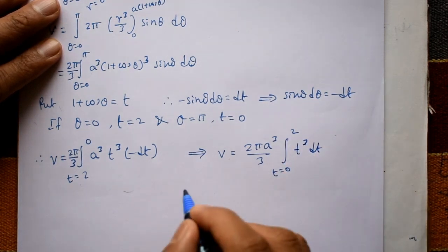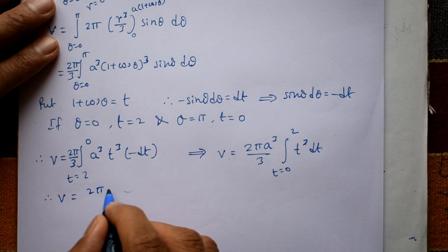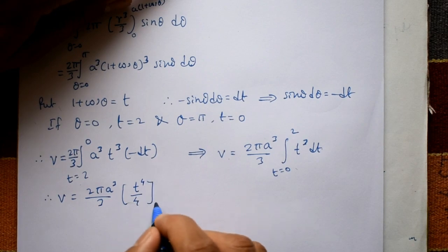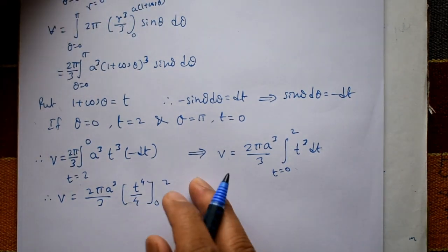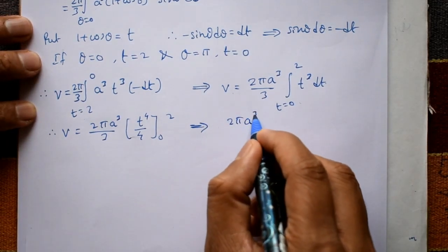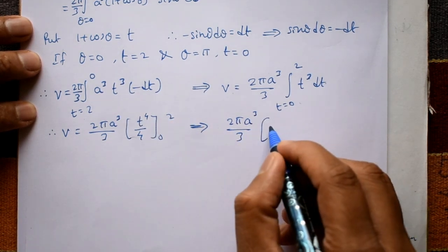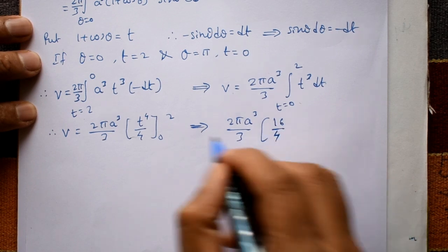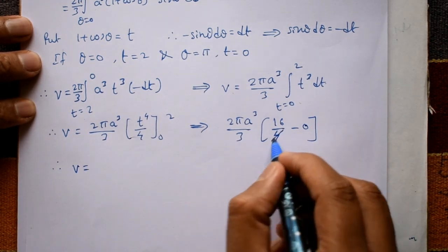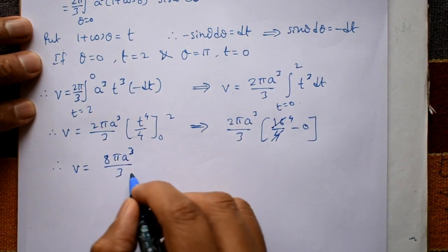Now integrating t³ with respect to t: V = (2πa³/3) · [t⁴/4] from 0 to 2. Substituting the upper limit, 2⁴ = 16, so we get (2πa³/3) · (16/4) = (2πa³/3) · 4. Therefore V = 8πa³/3. This is the required solution.